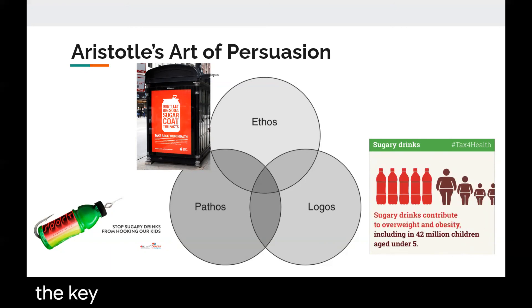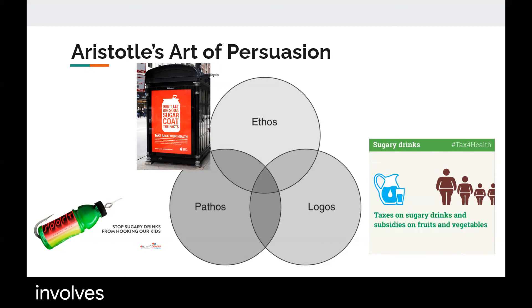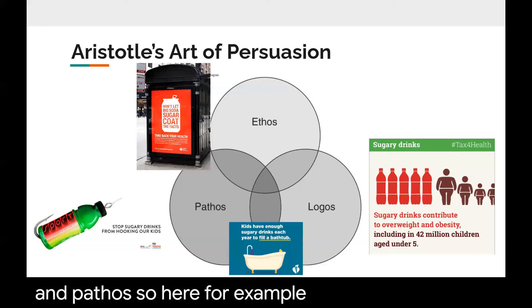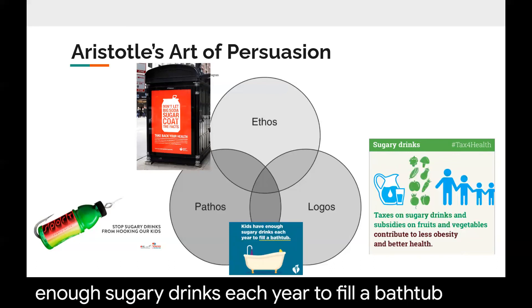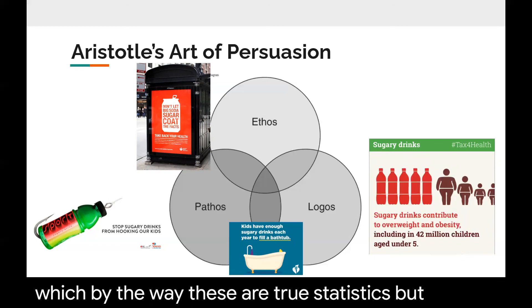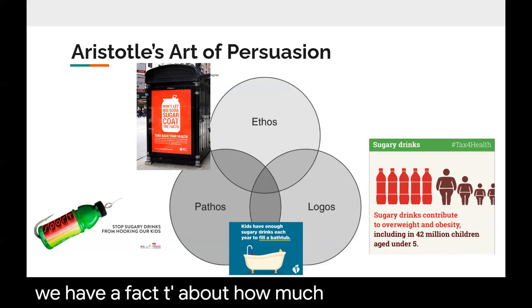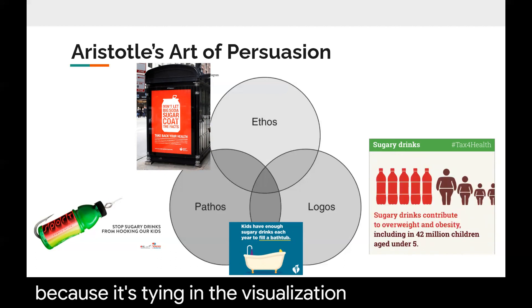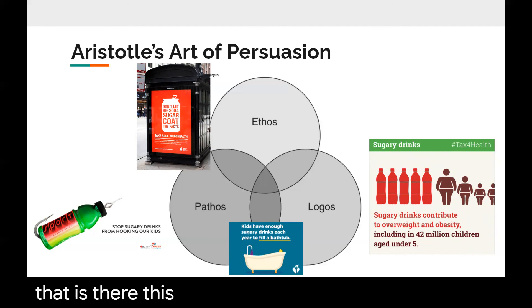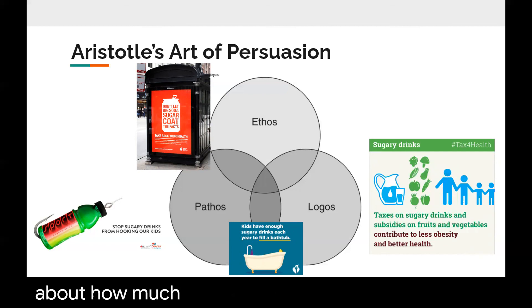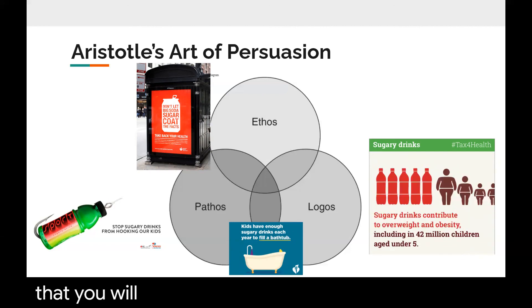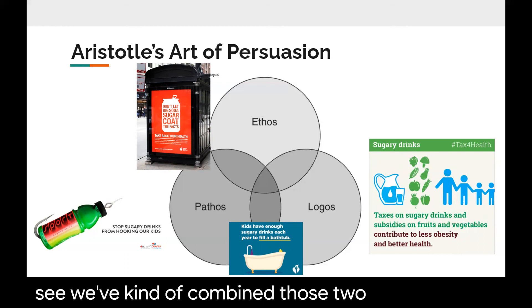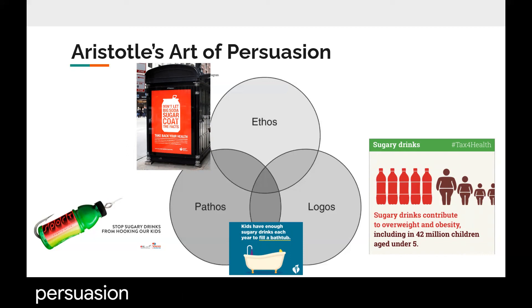The key to Aristotle's art of persuasion is that it usually involves overlapping multiple aspects of ethos, logos, and pathos. For example, 'Kids have enough sugary drinks each year to fill a bathtub' — and by the way, these are true statistics. Here we have a fact about how much sugar kids consume in a year, but it's really emotional because it ties in the visualization of how much that is. This ad is meant to make you feel guilty about how much sugary drinks a child consumes so that you will work to combat it, combining those two aspects of persuasion to create a pretty effective campaign.